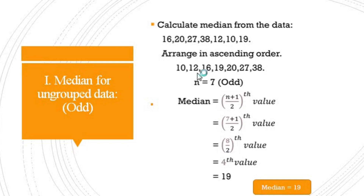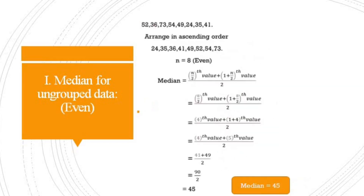Second case: given data is 52, 36, 73, 54, 49, 24, 35, and 41. After arranging in ascending order, the number of observations count n is equal to 8. Since 8 is even, we apply the second formula.